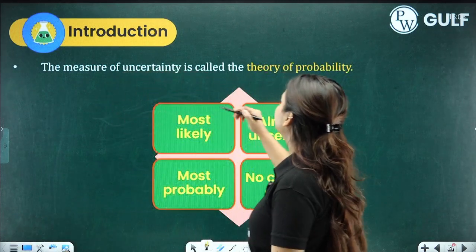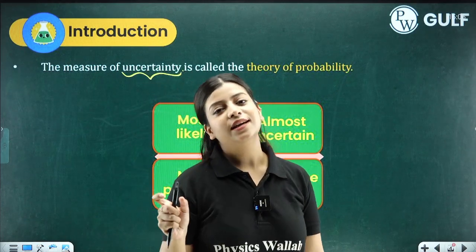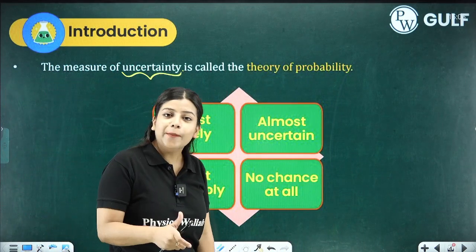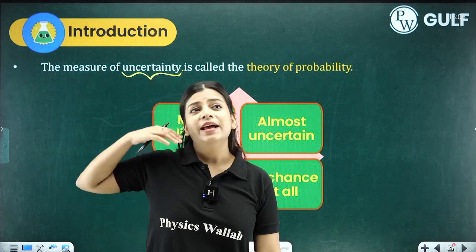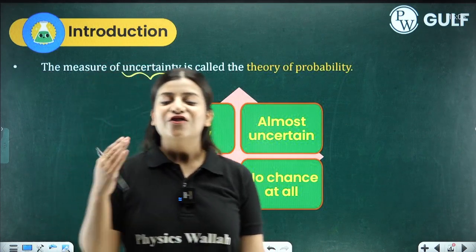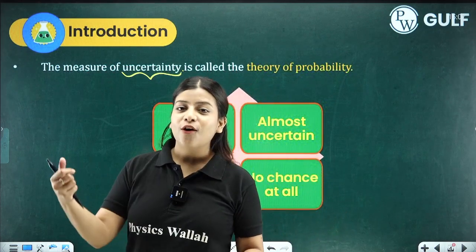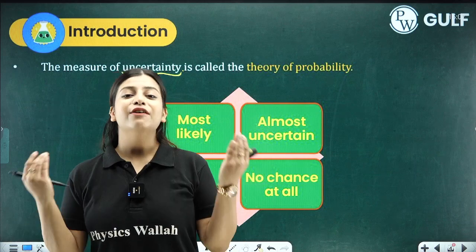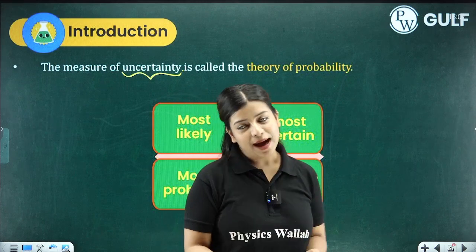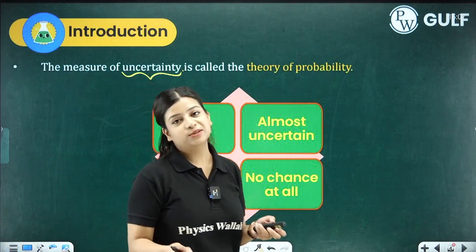What is probability? The measure of uncertainty — something that is not sure of happening; it can happen and it cannot happen. Since childhood, we just toss a coin. Even in cricket, to choose who will bat or bowl, we use a coin. Whoever chooses heads or tails has a fair, equally likely possibility of getting heads or tails. This is how probability affects and is implemented in our day-to-day life.